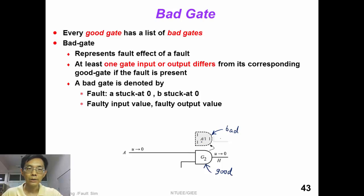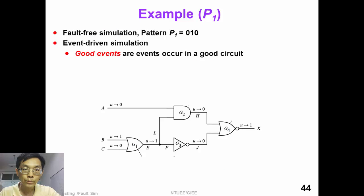This bad gate is denoted by the fault ID, the faulty input, and output values associated with this fault. For example, if A is stuck at one, then this upper input would be one instead of zero.